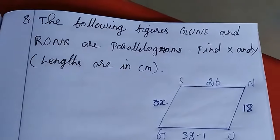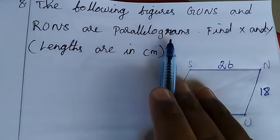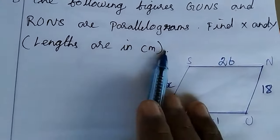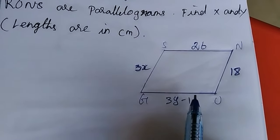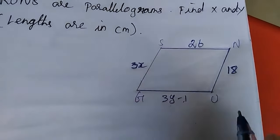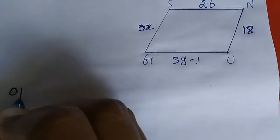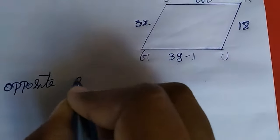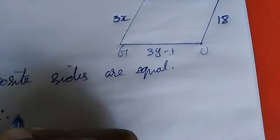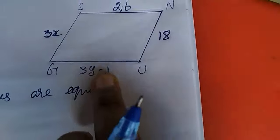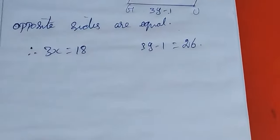Now we move to the 8th problem. The figures GUNS and RUNS are parallelograms — find x and y, lengths in centimeters. Since opposite sides are equal in a parallelogram, we get 3x equals 18 and 3y minus 1 equals 26. You have to solve these two equations to get the x and y values — this is the homework for you.